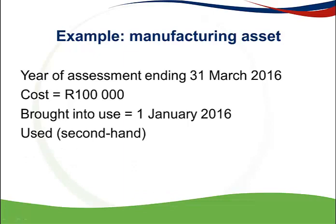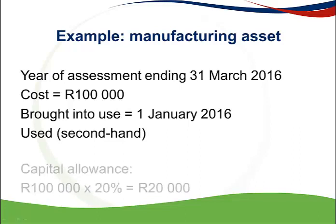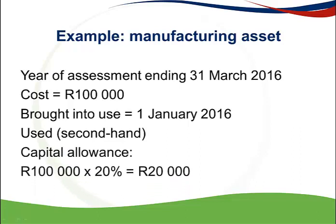Now assume the asset is used — secondhand. It was also brought into use on 1 January 2016, which is the current year of assessment. I will use the 20% allowance, claimed over 5 years because it is a used asset. Therefore, the capital allowance is the cost of 100,000 times 20%, which gives a deduction of 20,000 for the 2016 year of assessment.